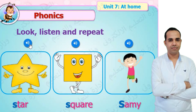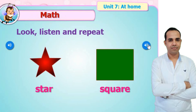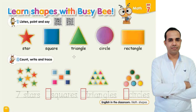S — star, square, semi. A — apple, ant, Amira. S — star, square, semi. الدرس التالت — Lesson 3: Learn Shapes with Busy People — هنتعلم الأشكال الهندسية. أول شكل: star — نجمة. Square — مربع. Triangle — المثلث. Circle — دايرة. Rectangle — مستطيل.